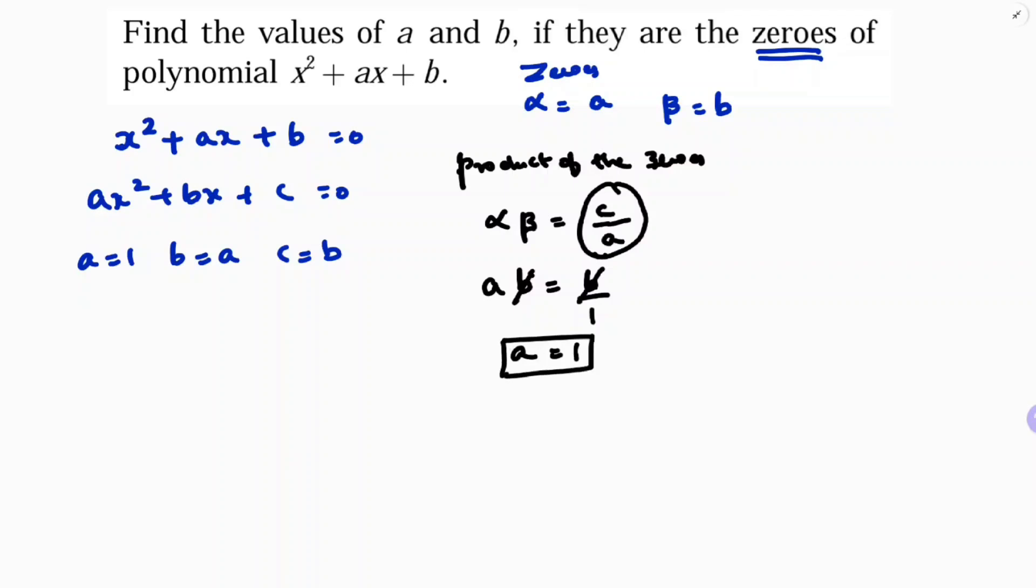So a is one. Now you need to find b, so to get the value of b, do sum of the zeros. Alpha plus beta is minus b by a. Alpha is a, beta is b, minus b value is minus a.